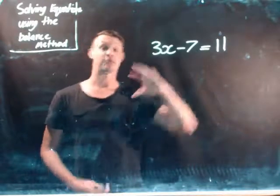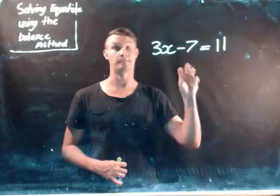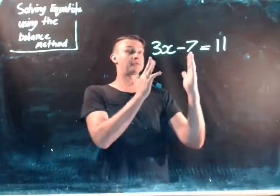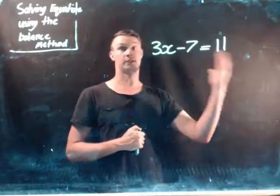So now we have an actual equation and I'm going to show you how we do the balance method using this actual equation. So effectively here I have 3x minus 7 equals 11.